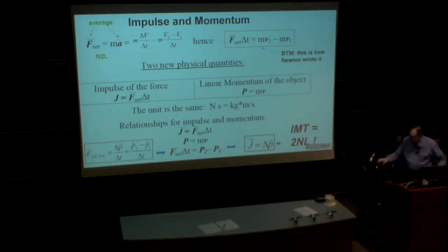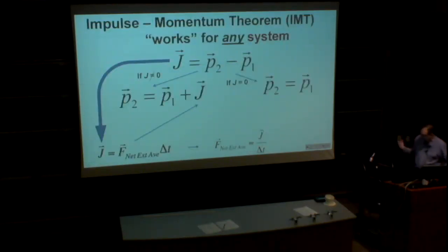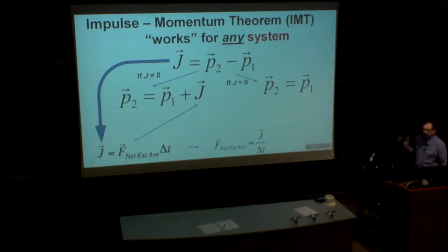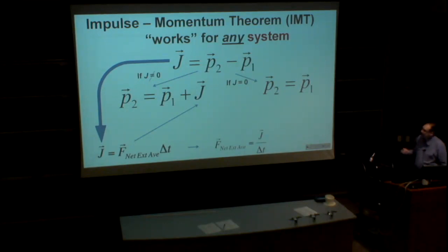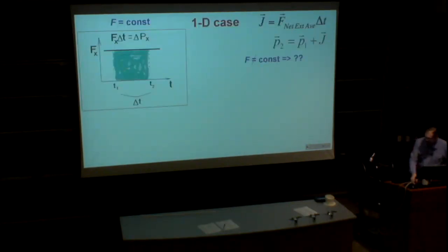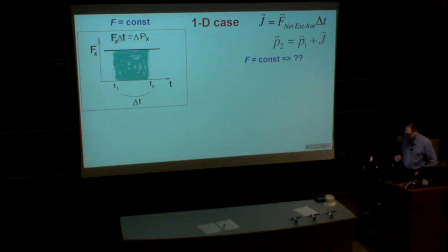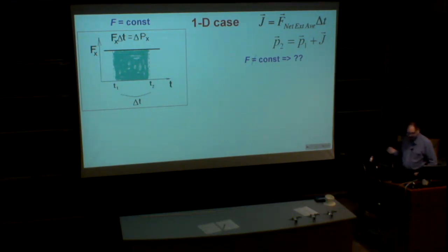We have to figure out how to get the average. We have two extreme situations. Number one: when impulse equals zero, in that case momentum of the whole system doesn't change. Number two: when impulse is not equal to zero, in that case it changes linear momentum. That was the last slide we saw yesterday. We need to talk about how to estimate the impulse of the force when the force changes in time.